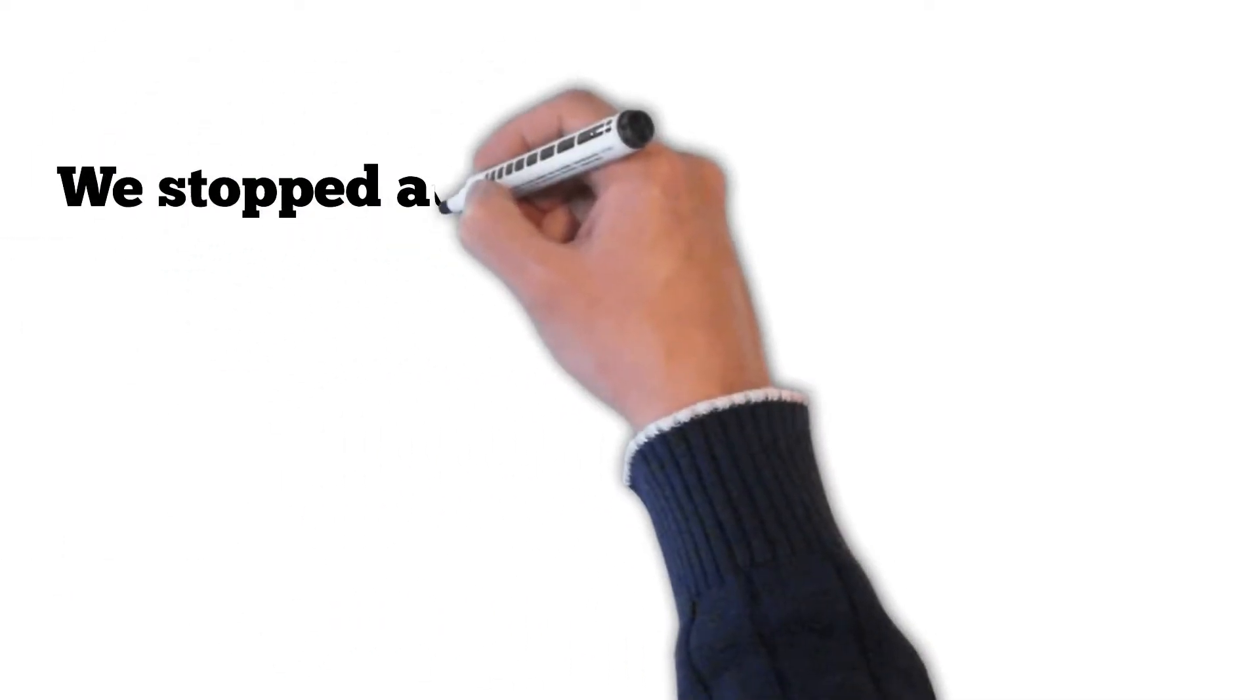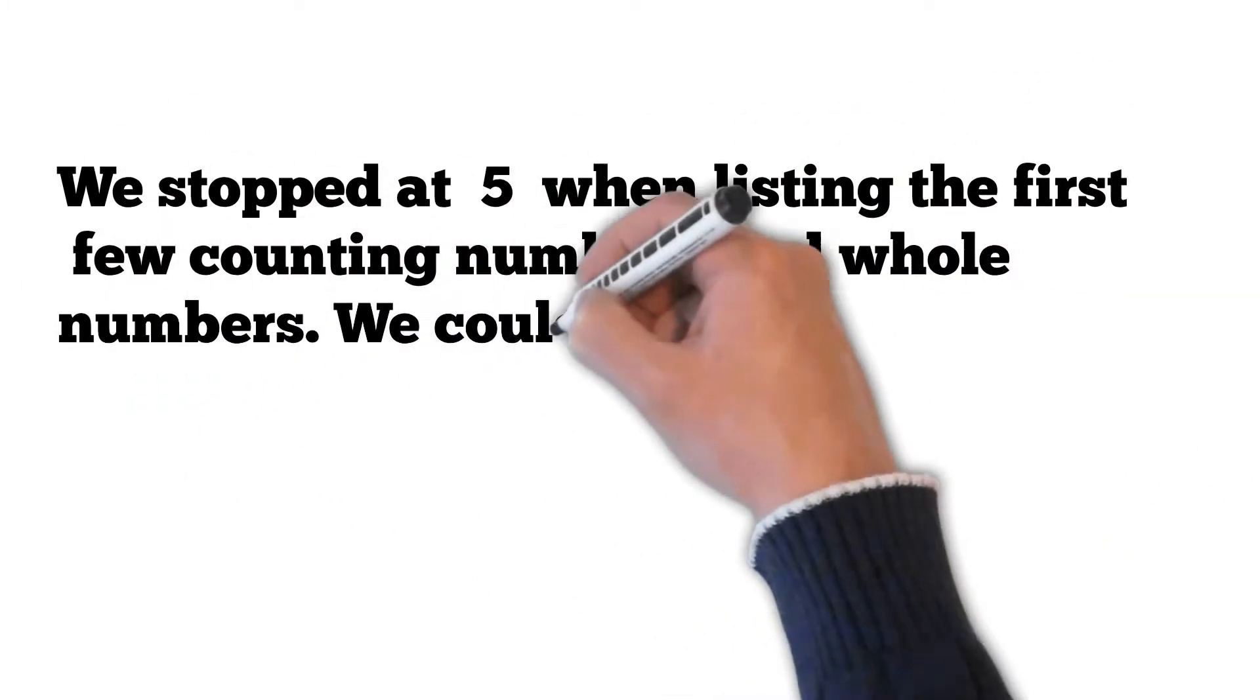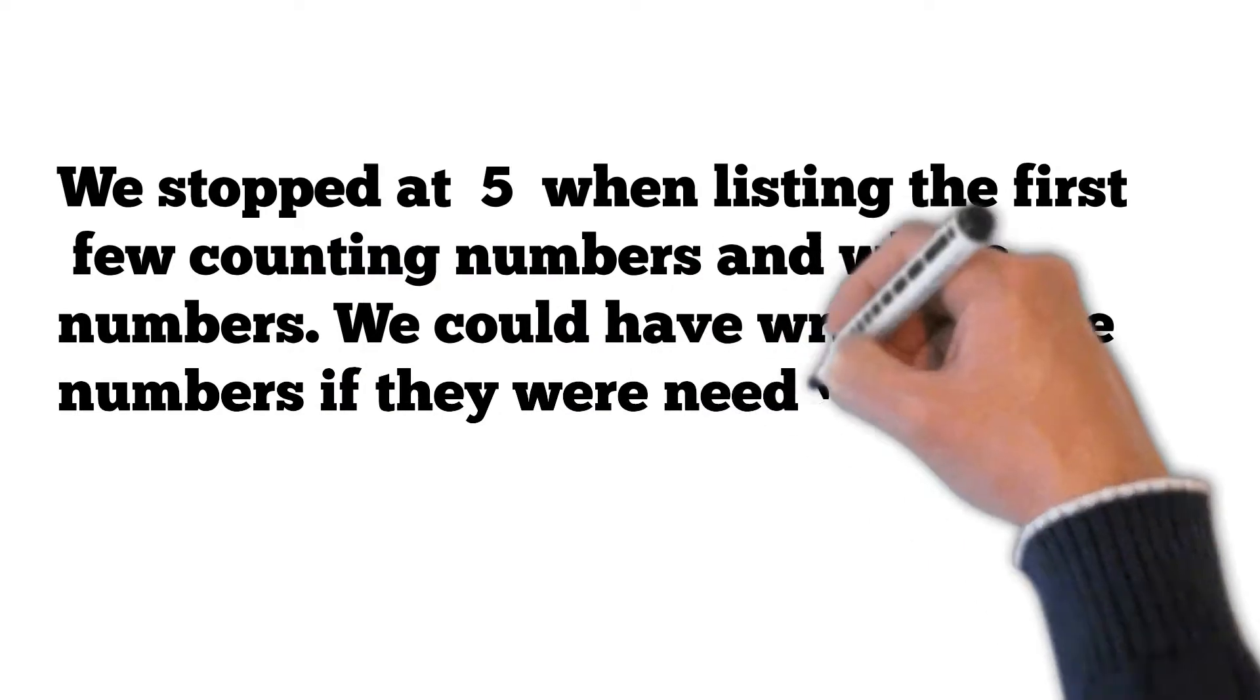We stop at 5 when listing the first few counting numbers and whole numbers. We could have written more numbers if they were needed to make the patterns clear.